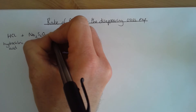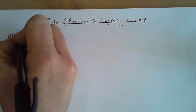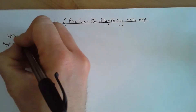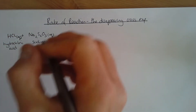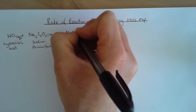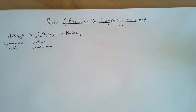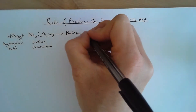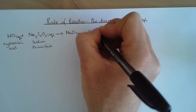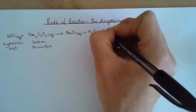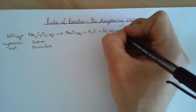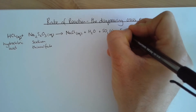Both of these are dissolved in water, so we say they are aqueous solutions — that's what the 'aq' labels mean. When these chemicals react, they produce sodium chloride, which is also dissolved in water. They also produce water, a gas called sulfur dioxide, and sulfur.